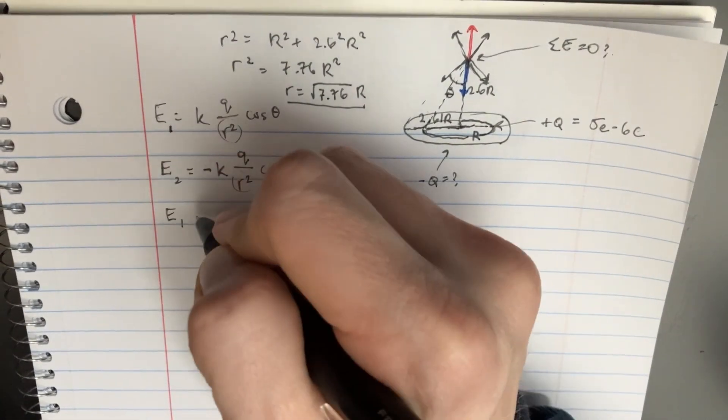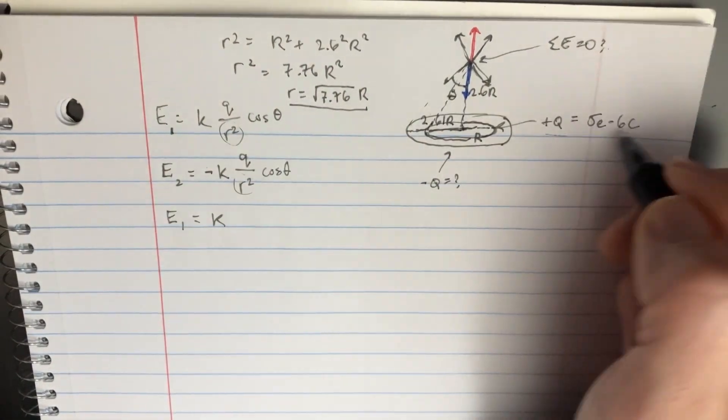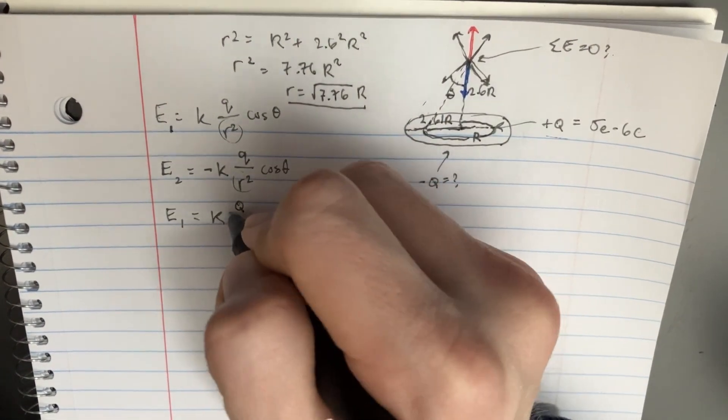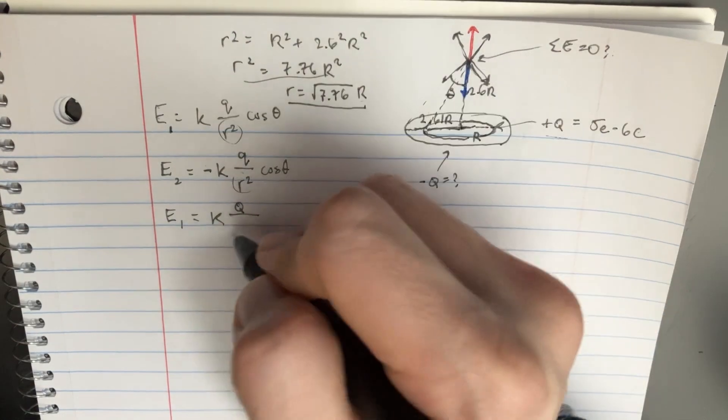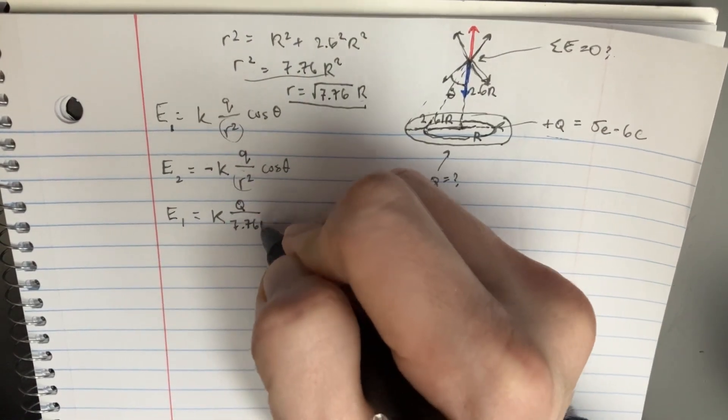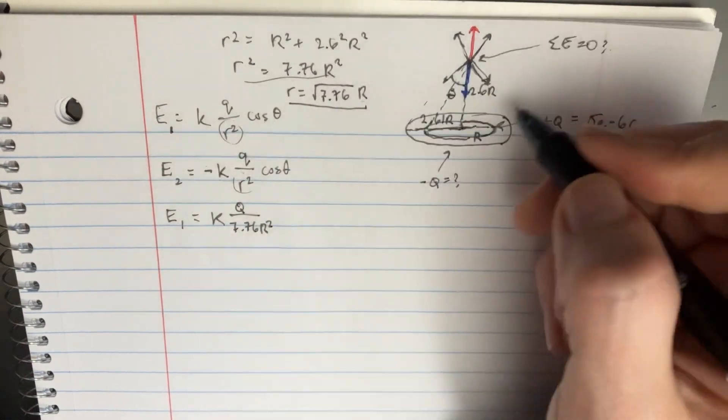So we can go E1 equals k. And we already know what q is. That's this one. So q divided by the r squared, which is this part, 7.76 r squared. All right, and then now we have the cosine theta, so let's figure out what cosine of theta is.